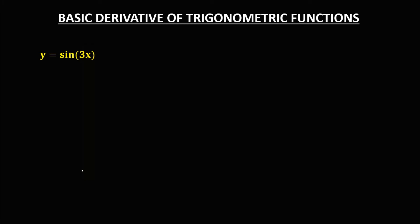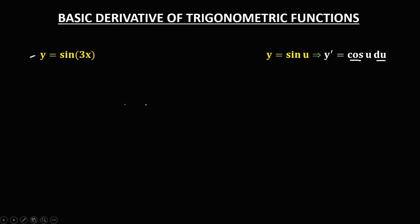We have the given y = sin(3x). Since the derivative of sin(u) is cos(u) times the derivative of u, for this given, u is equal to 3x, and the derivative of u, or the derivative of 3x, is 3.